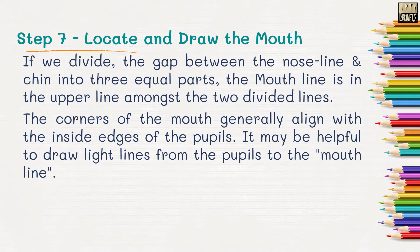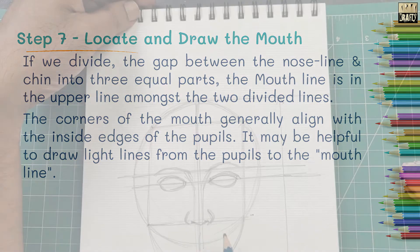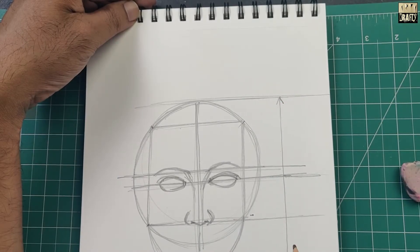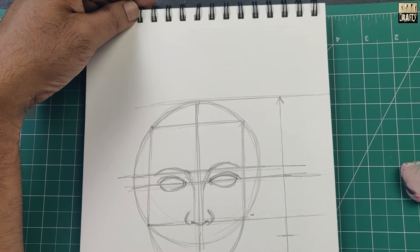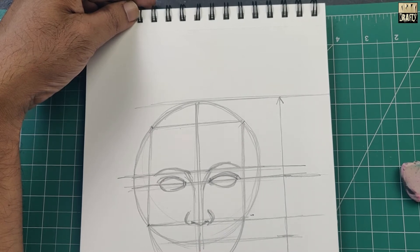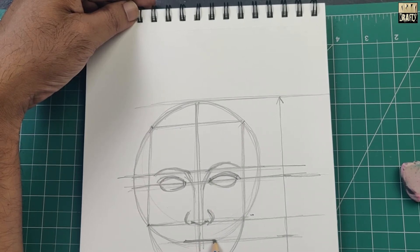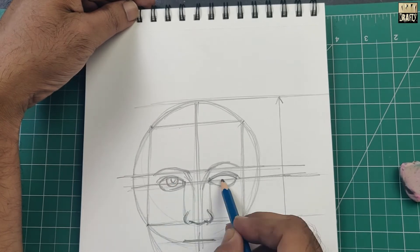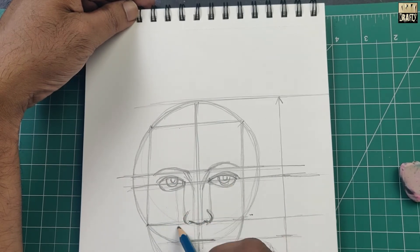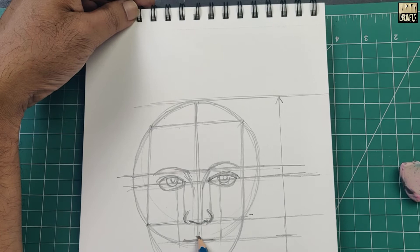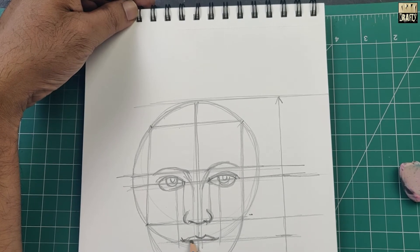Step 7. Locate and draw the mouth. If we divide the gap between the nose line and the chin into three equal parts, the mouth line is in the upper line amongst the two divided lines. The corners of the mouth generally align with the inside edges of the pupils.